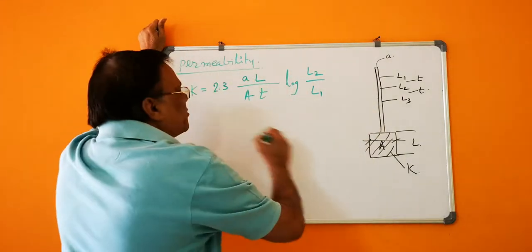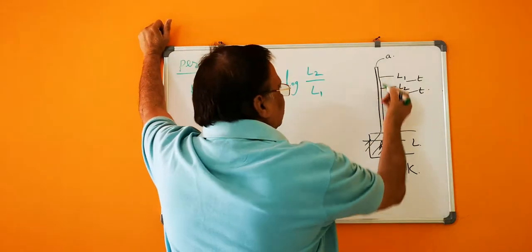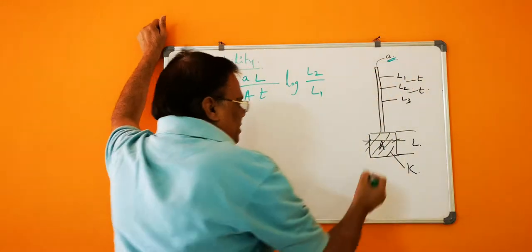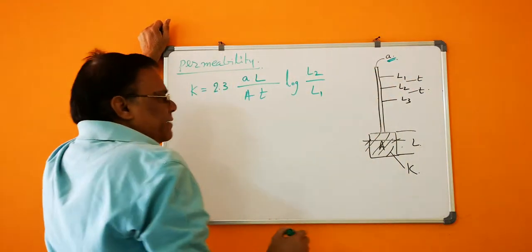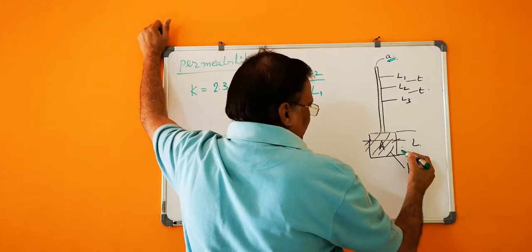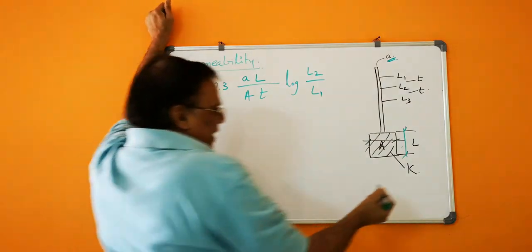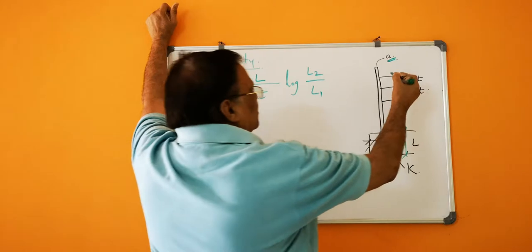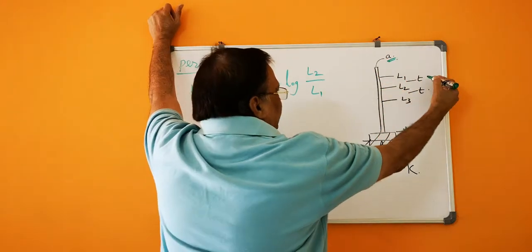This is a permeability problem, very simple problem but tricky. The standing pipe area is a, the sample area is big A (capital A), L is the length of the sample, and K is the permeability of the sample. The water is falling from L1 to L2 in time T.